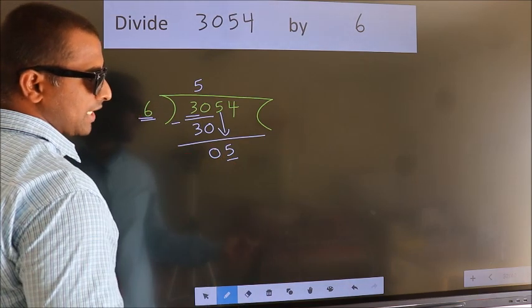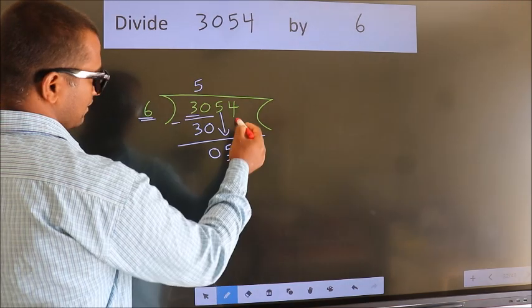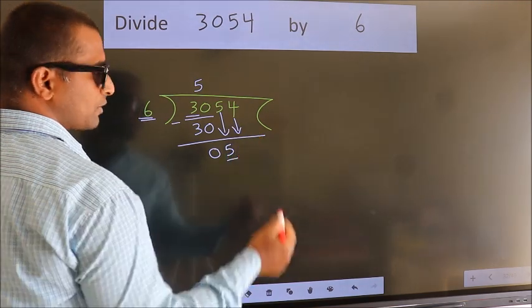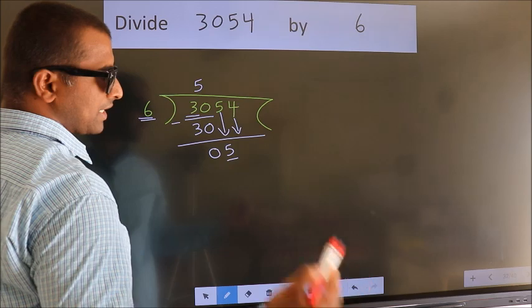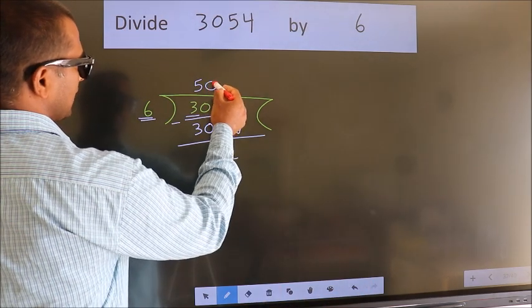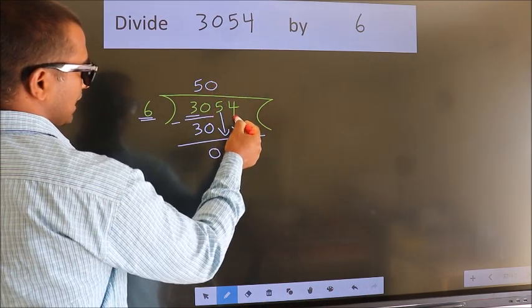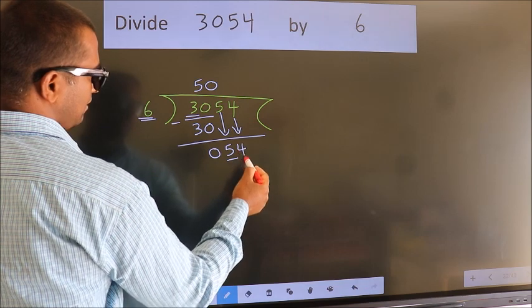So we should bring down the second number. And the rule to bring down second number is, put 0 here. Then only we can bring down this number.